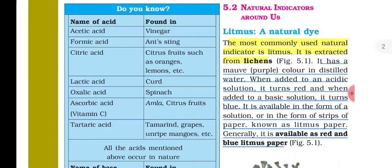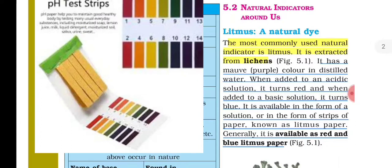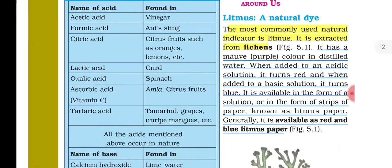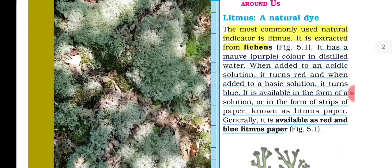Let's start with litmus and natural dye. The most commonly used natural indicator is litmus. It is extracted from lichens. It has a purple color in distilled water. When added to an acidic solution it turns red, and when added to a basic solution it turns blue.